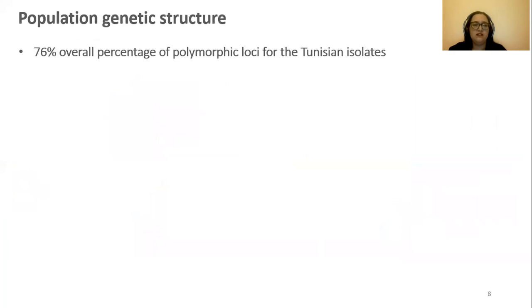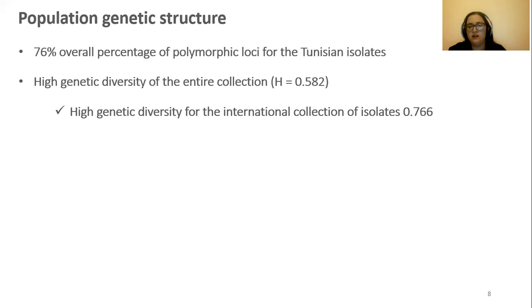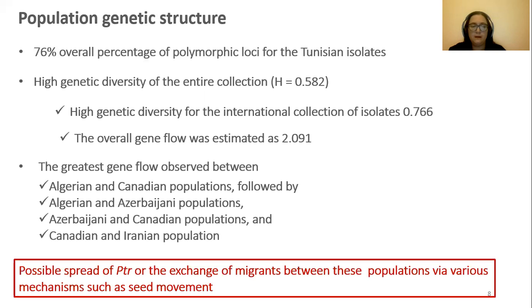The population genetic structure revealed 76% overall percentage of polymorphic loci of the Tunisian isolates. It also revealed high genetic diversity of the entire collection as well as the international collection of isolates. The overall gene flow was estimated as 2.091. The greatest gene flow was observed between the Algerian and Canadian populations, followed by Algerian and Azerbaijani populations, then Azerbaijani and Canadian populations, and finally Canadian and Iranian populations. This can be due to the possible spread of PTR or the exchange of migrants between these populations via various mechanisms such as seed movement.